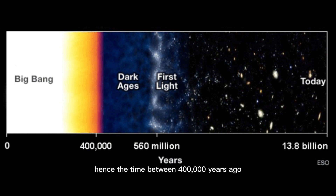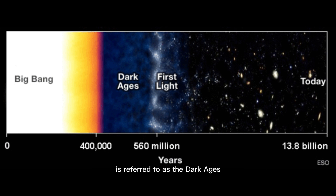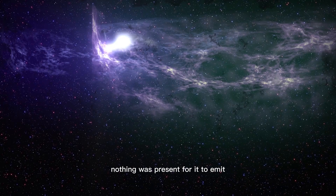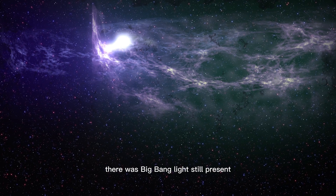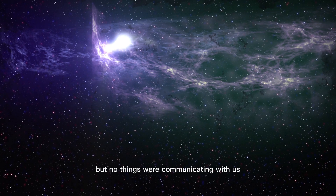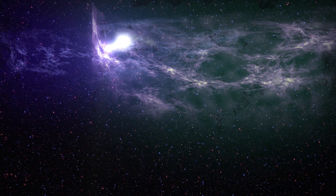The time between 400,000 years after the Big Bang and the birth of the first stars is referred to as the dark ages. Nothing was present to emit light. There was Big Bang light still present, but no things were communicating with us.